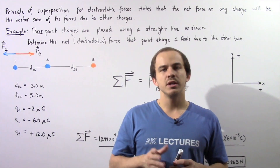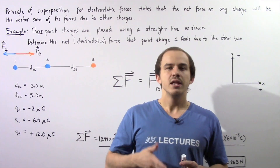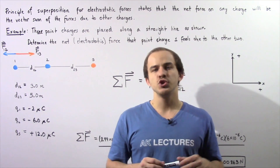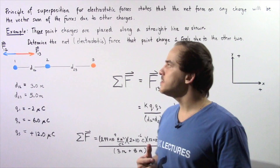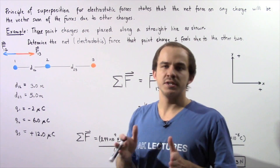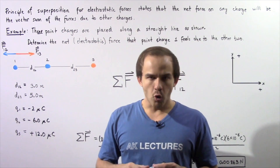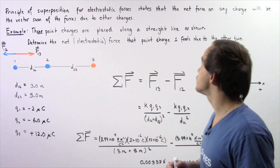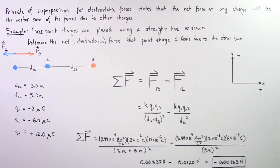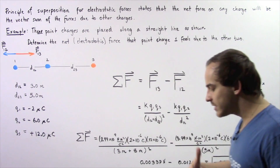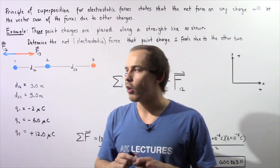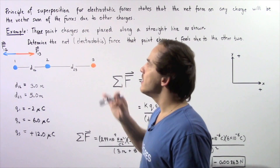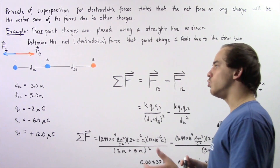Let's look at the following example in which we're going to calculate the net electrostatic force that one point charge feels as a result of two other point charges. We'll begin by recalling the principle of superposition of electrostatic forces, which states that the net force on any single point charge will be the vector sum of the forces due to the other point charges. We'll apply this principle along with Coulomb's Law.